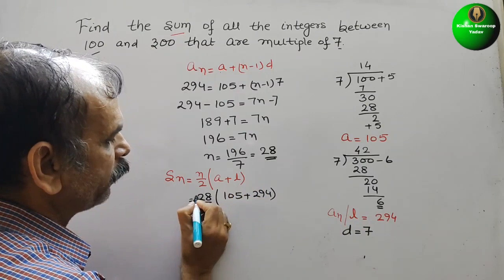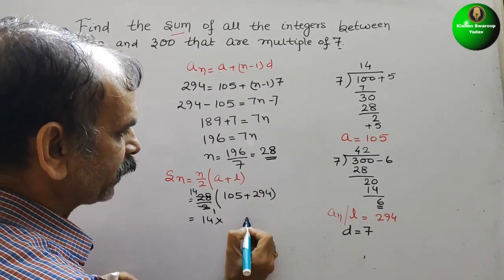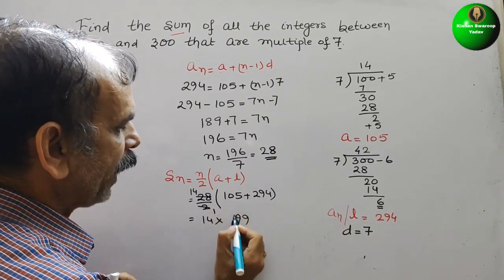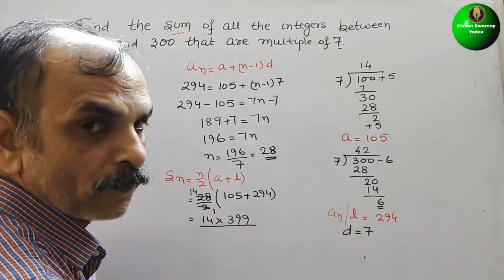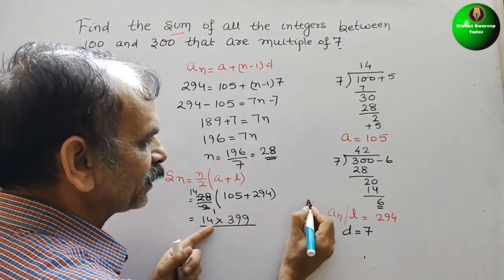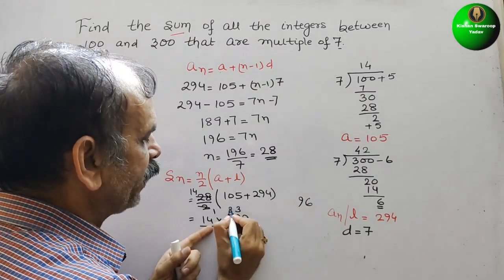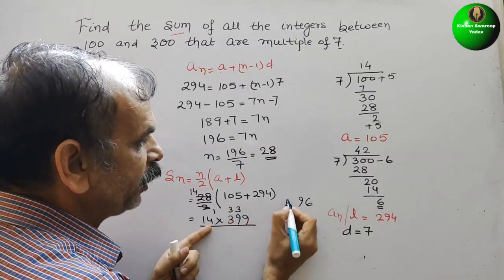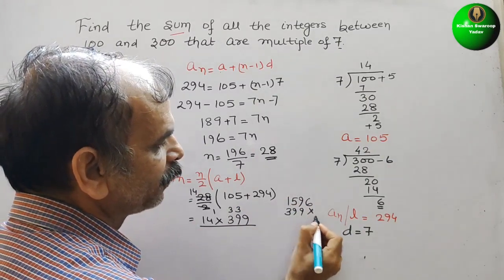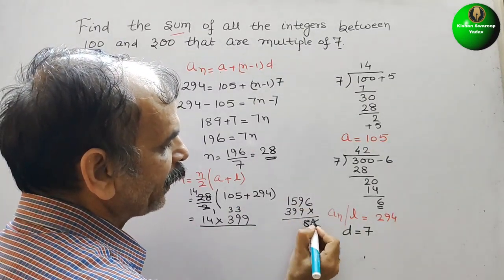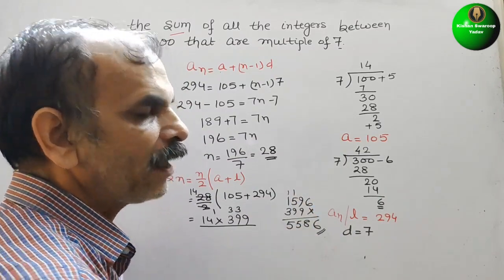So just reduce, it will be 14. So you will get 14 into, add them, 5 plus 4 is 9, 9 and 3. So 399. Now multiply it. If you multiply it, 4 into 9 is 36, 3 carry. Again 36 plus 3 is 39, 3 carry. 4 into 3 is 12 plus 3 is 15. By 1. So it will be 9, 9, 3. So it will be 6, 18, 1 carry, 15, 1 carry, 5. So your sum is 5586.